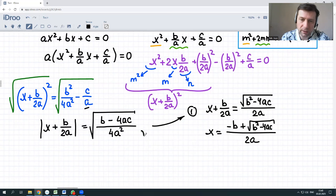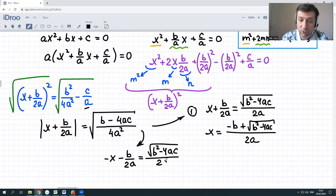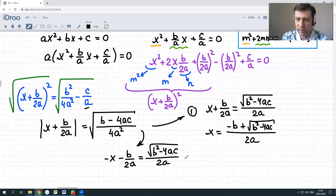Let's move to the second case. The second case is the expression under the absolute value is negative, which means negative x minus b over 2a is equal to the square root of b squared minus 4ac over 2a. Again, the same denominator here and there.